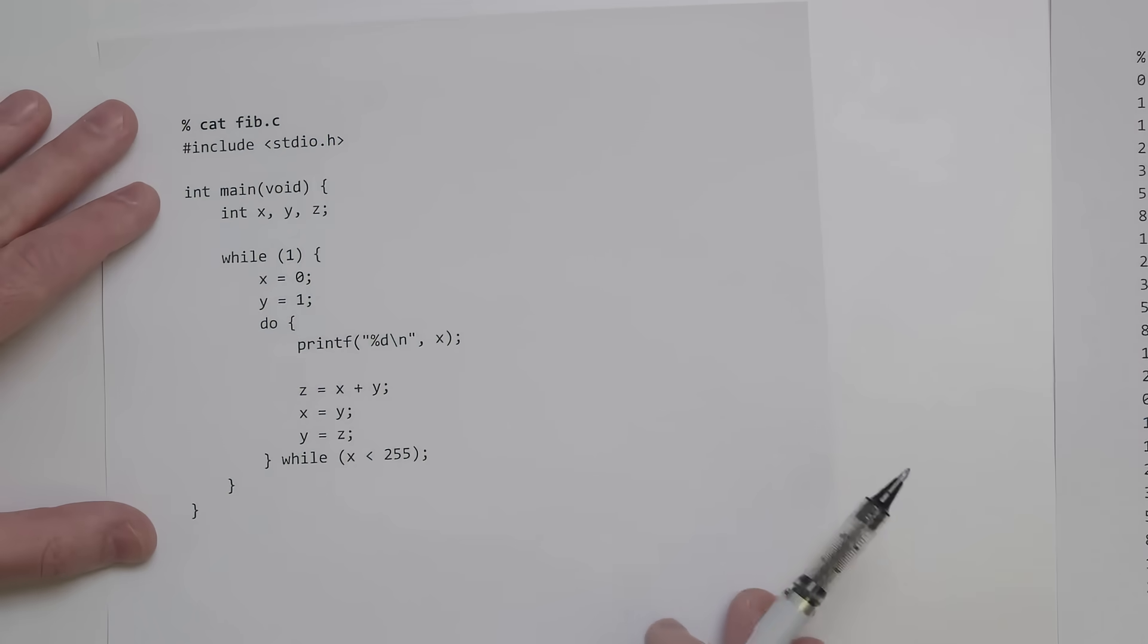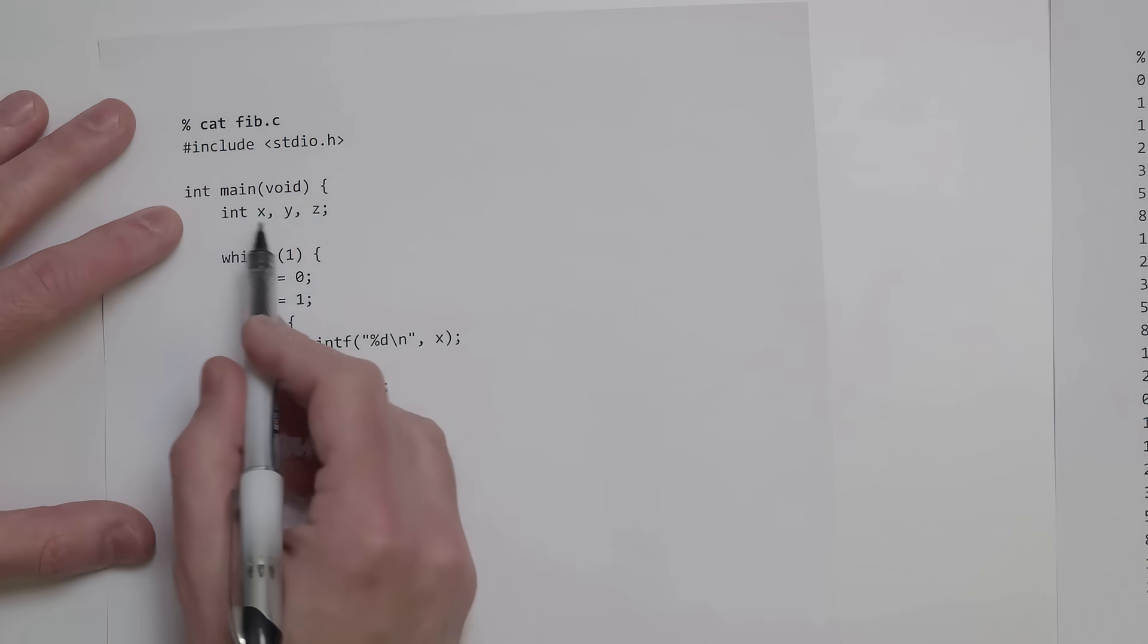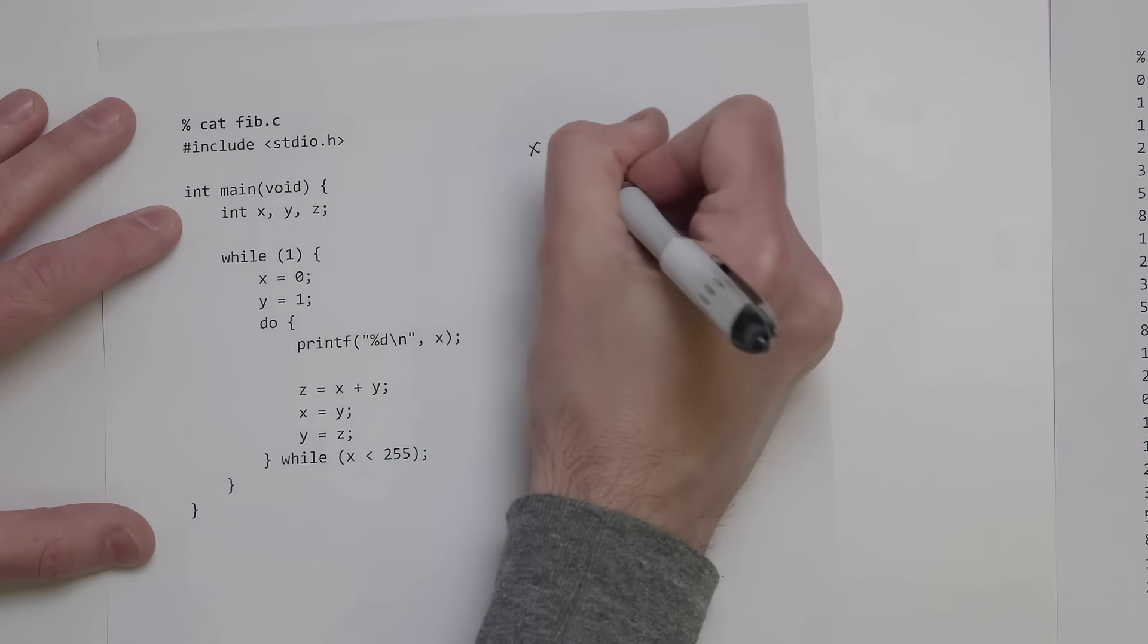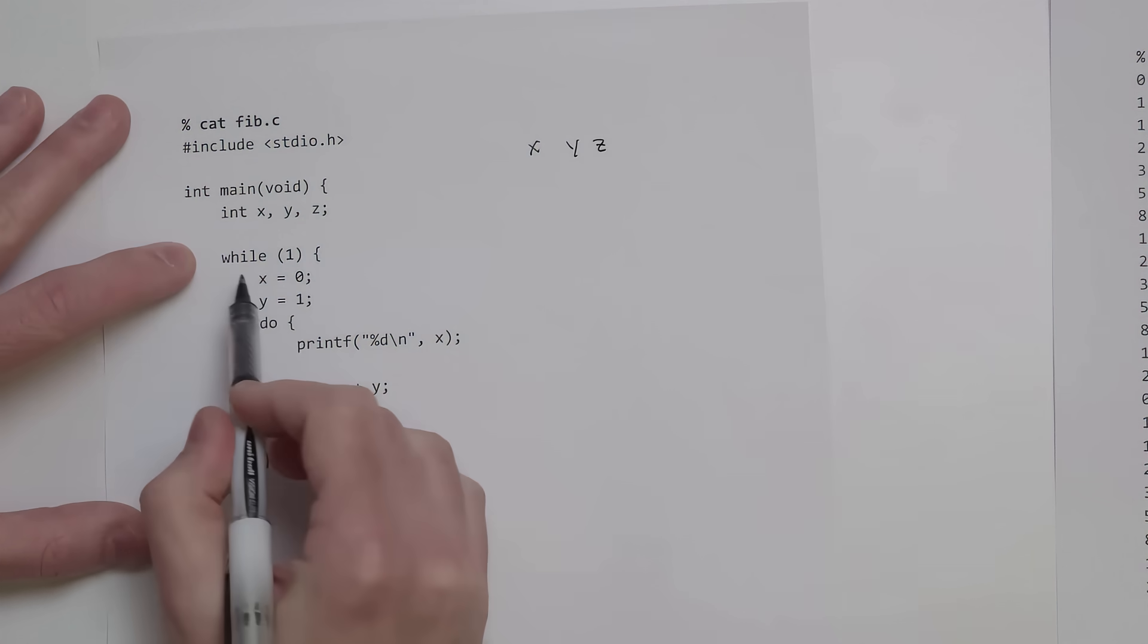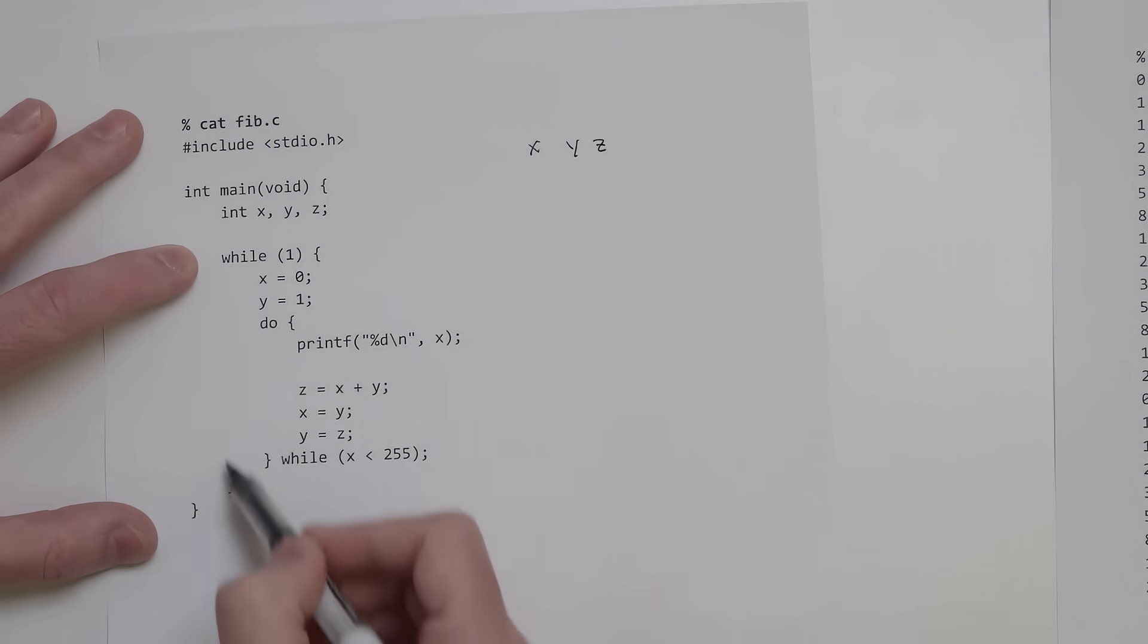To walk through this program to make sure we understand how it works, we've got three variables: x, y, and z, and we have this loop that just continues forever.